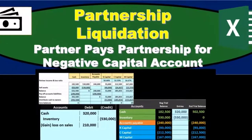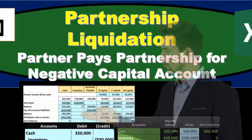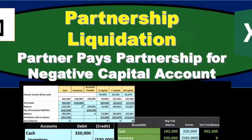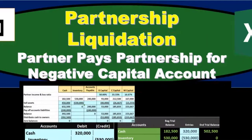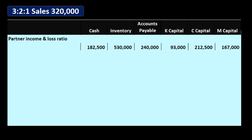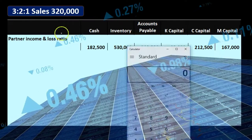In this presentation we will take a look at a partnership liquidation in which one partner will end up with a negative capital account and have to pay back the partnership within the liquidation process. Here's our data: the profit sharing split is a 3-2-1 split, which means we're going to have to use a ratio.